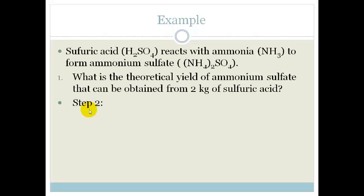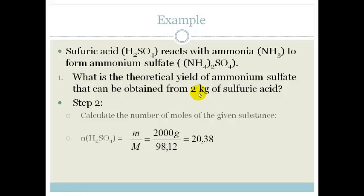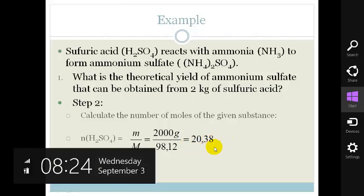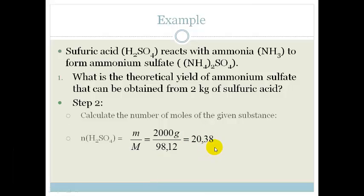Next, we need to now look at the number of moles of the given substance. We never work with mass. We only work with moles. So, the number of moles is always the mass over the molar mass. Please note, we've taken this 2 kilograms and changed it to grams. So, it's 2,000 grams. And, this is of sulfuric acid. So, that there is the molar mass of your 2 hydrogens plus your sulfur plus your 4 oxygens, which is 2 times 2 plus your 32 plus 4 times 16, which gives you 98.12. So, the number of moles of sulfuric acid is 20.38.